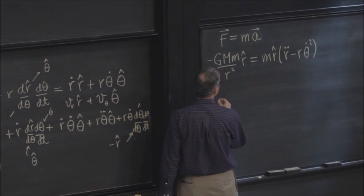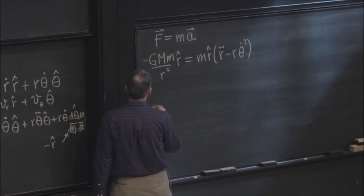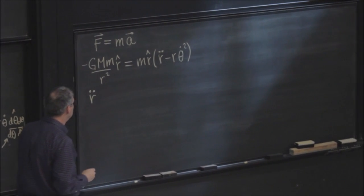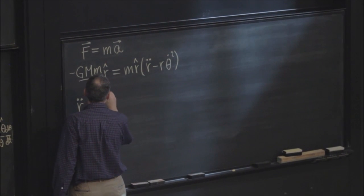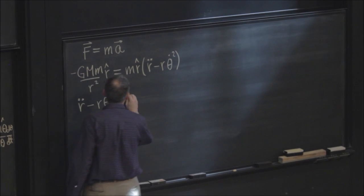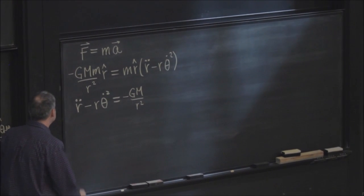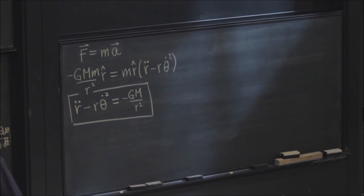Okay, so let me rewrite just slightly. We have r double dot minus r theta dot squared is equal to minus GM over r squared. That's the equation that Newton's laws tell us we have to solve if we're going to describe planetary motion. And we're going to try to be brave enough and see if we can solve it.